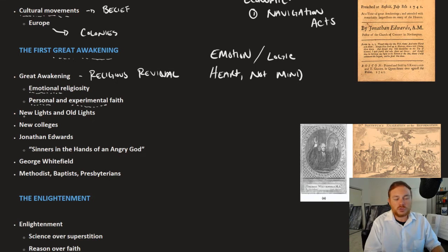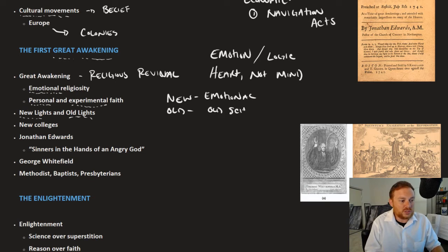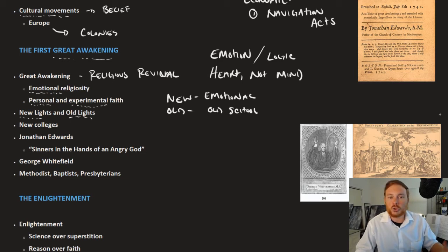Those who were affected by the Great Awakening divided themselves into two categories, new lights and old lights. The new lights liked the new emotion, the new emotional approach. Old lights liked the old way, old school. They said you should read the Bible, you shouldn't feel it. You should know how to read and you need to learn something before you preach something.